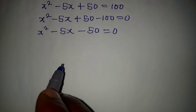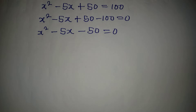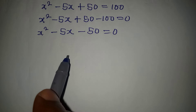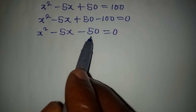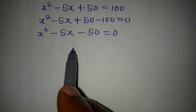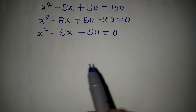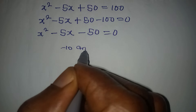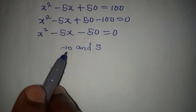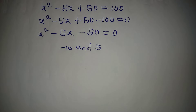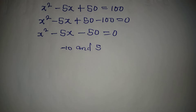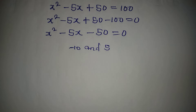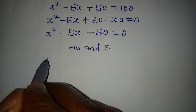The next thing we will do is solve this quadratic equation. Let's try to factorize it. What two numbers multiply to get -50 and add to get -5? The two numbers are -10 and 5, because -10 times 5 gives -50, and -10 plus 5 gives -5.